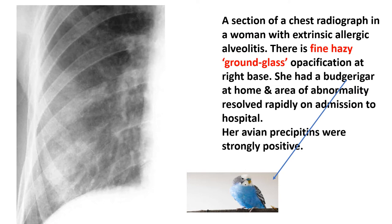This X-ray shows a section of a chest radiograph in a woman with extrinsic allergic alveolitis. There is a fine hazy ground-glass opacification at the right base. She had a budgerigar at home and the area of abnormality resolved rapidly on admission to hospital. Her avian precipitins were strongly positive.